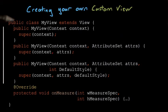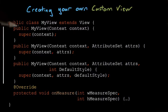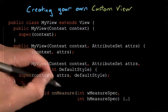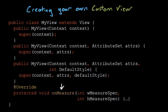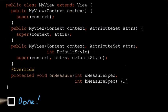You'll need to include three constructors to support your view being created in code, through a resource, or through inflation. Then simply override the onMeasure method and set your dimensions. Click here when you're done, and you're ready to get started drawing the contents of your view.